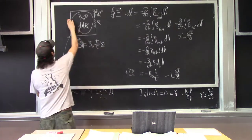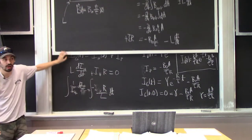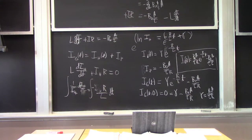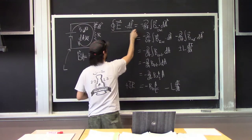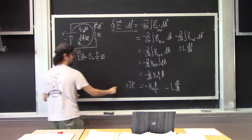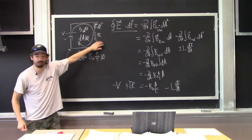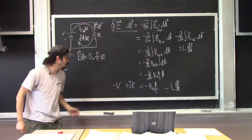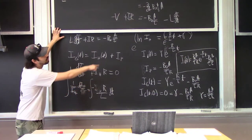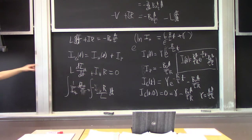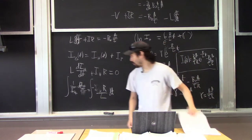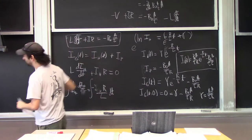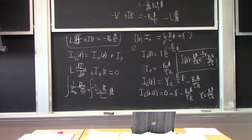You could also change the initial condition — instead of the current being zero at t = 0, it has some value I. There's one more thing that could change, and that's what the classwork for today gets into: you can obtain a similar form of this equation for different circuit components. That's a good jumping-off point for what we're going to be doing today.